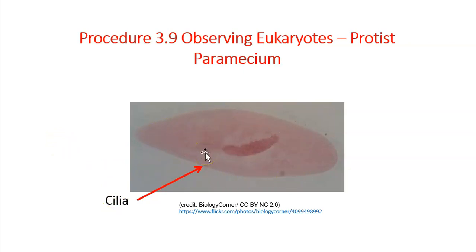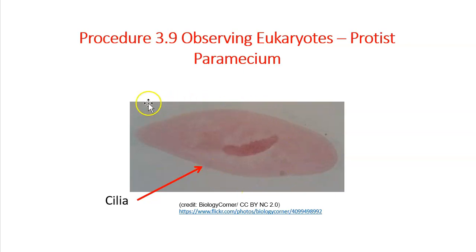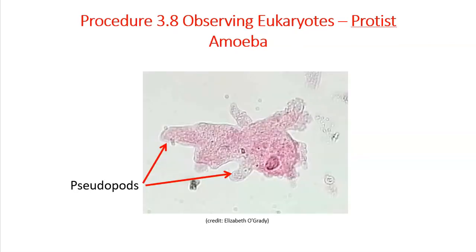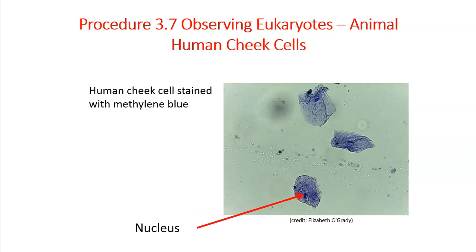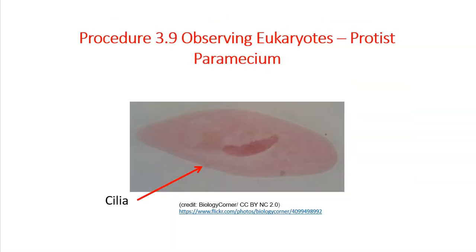Make sure that not only can you identify each cell — saying this is a paramecium — but also that you can say it's a protist and that it is a eukaryotic cell. You know these things from looking at it, and you know it's eukaryotic because you can actually see stained organelles. We want to be able to identify whether it's a cheek cell, a potato cell, or a paramecium, and also know whether it's eukaryotic or prokaryotic, and if eukaryotic, whether it's a plant, animal, or protist.